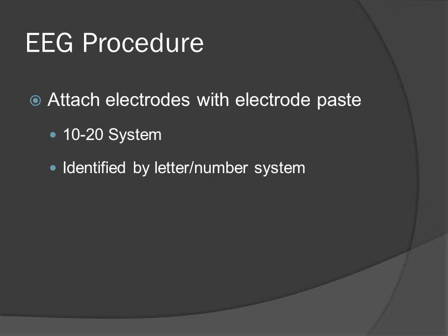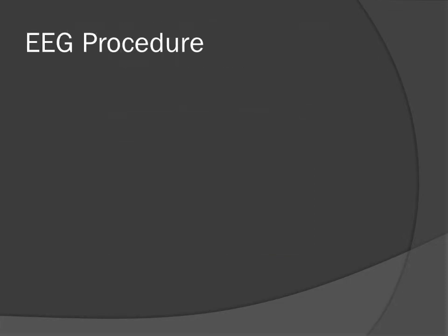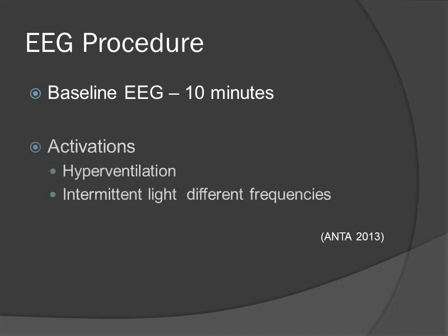Each electrode corresponds to a letter and/or a number as per the 10-20 system convention. It is important that each electrode is carefully matched up with the correct corresponding lead from the head box, as poor placement will give incorrect results.